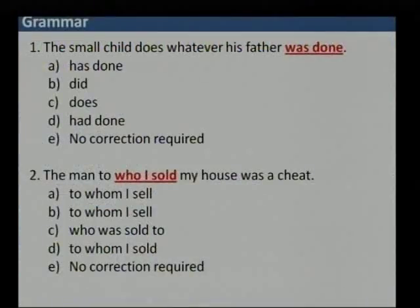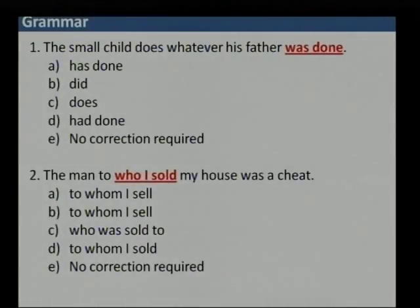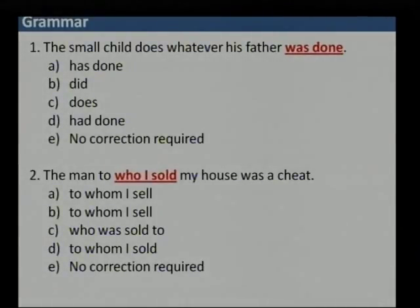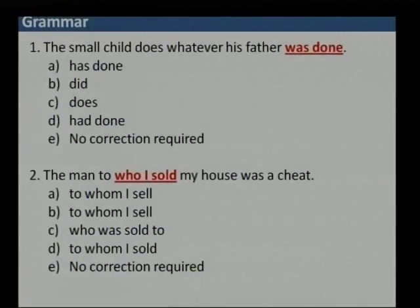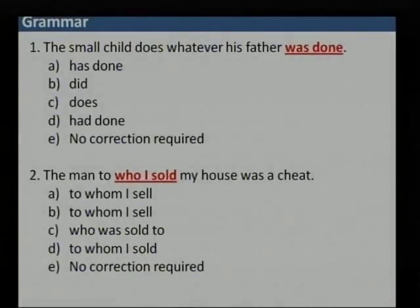It is basically sentence improvement. Question number 1: 'The small child does whatever his father was done.' It cannot be 'was done' — the father was not done something. The father did. The small child does whatever his father did. 'Did' is the correct answer because whatever the father did in the past, the child is going to do now.